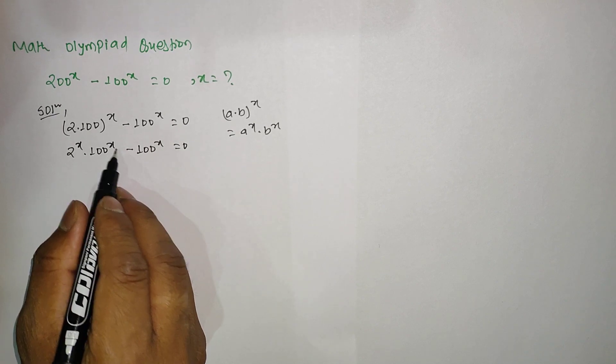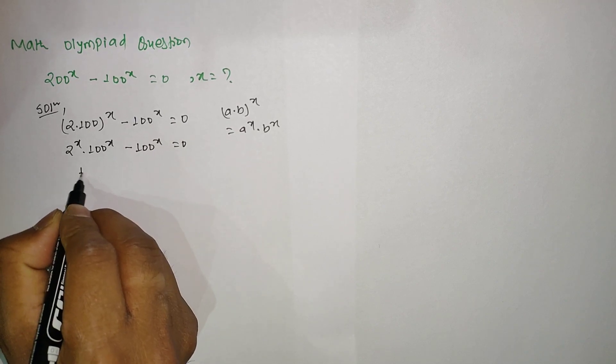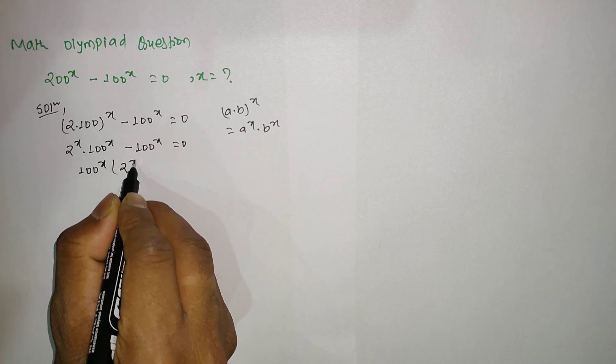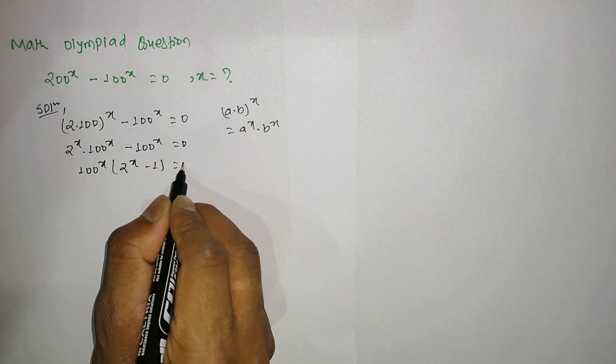Here we can see that 100^x is common. So we can take 100^x as common, and then we are remaining with 2^x - 1 = 0.